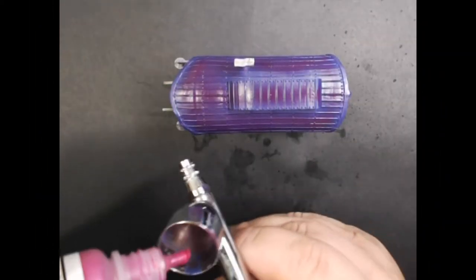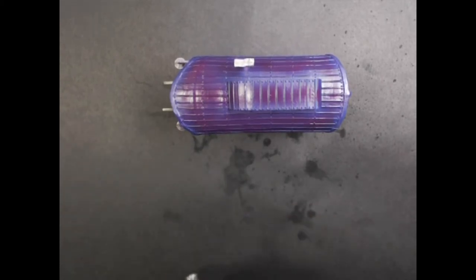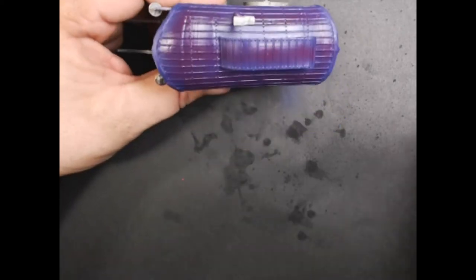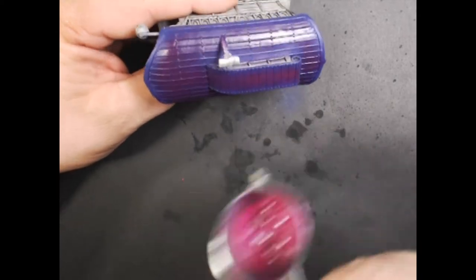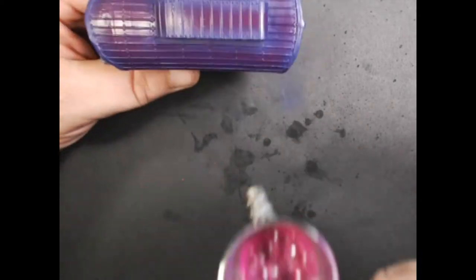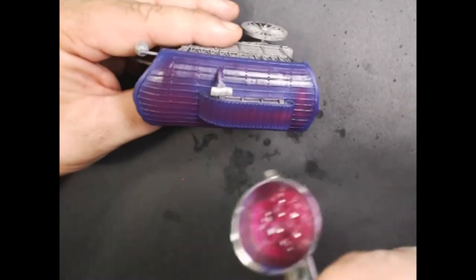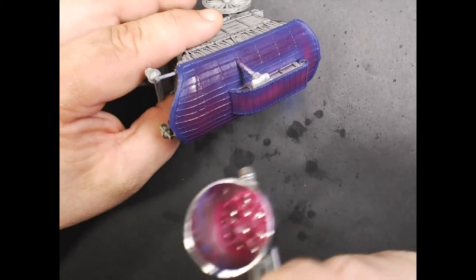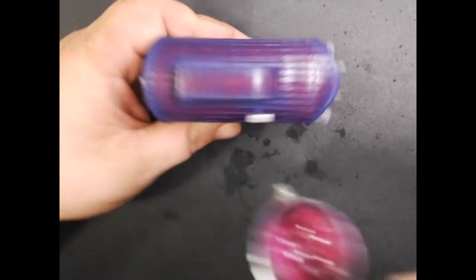Now we've got some Vallejo Game Air Warlord Purple. Now we're going to highlight the center of what we used with the violet red, just brightening it up a little bit. But we don't want to cover up all the violet red.